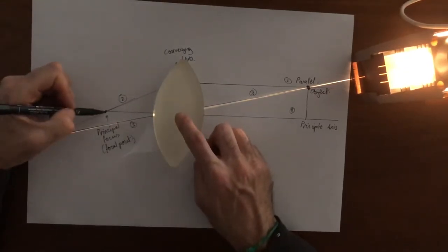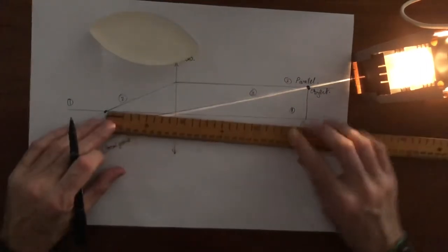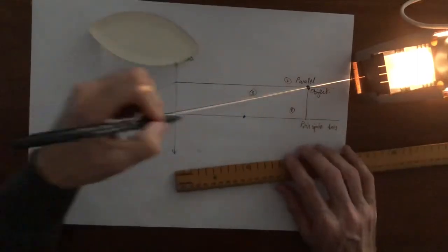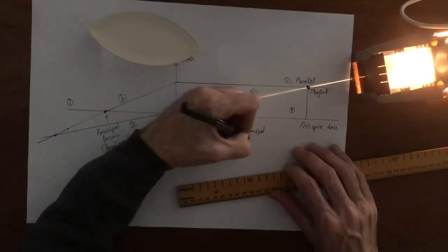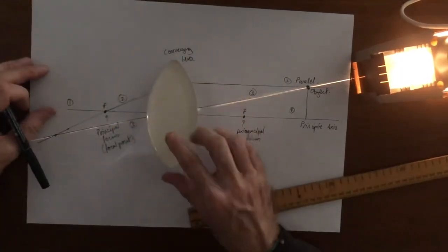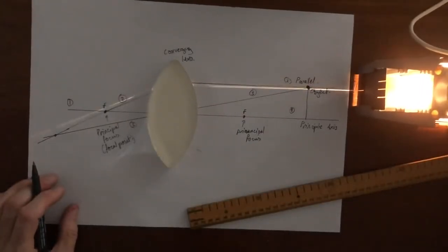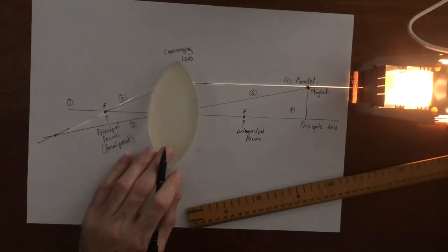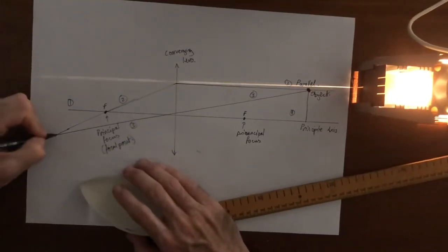The principal focus is this far away, and because of the symmetry, if we shone light in through the other direction there would be a principal focus on the other side, the same distance away. This one here is about just over nine centimeters, so let's place another one just over nine centimeters away on the other side — that is also a principal focus, sometimes called position F for focus. We can see that both of these rays are meeting at this point here, and this point is what we call the image.